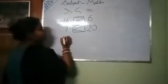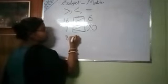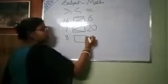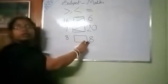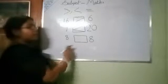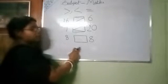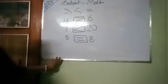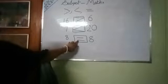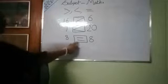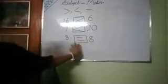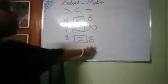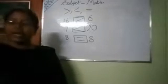One more example. Here is 8, and here also 8 — both sides have the same number. Both are equal, so we will put the equals to sign. Because both sides are equal, we put the equals to sign.